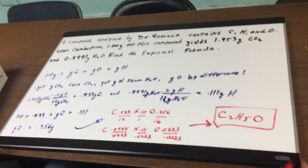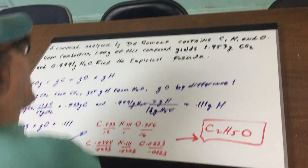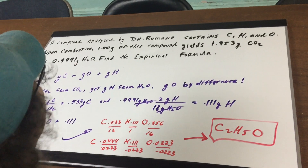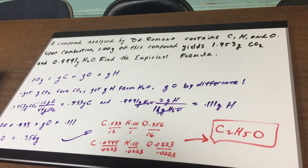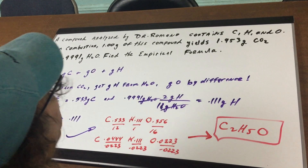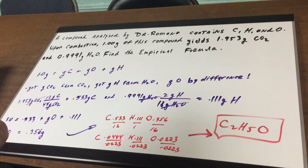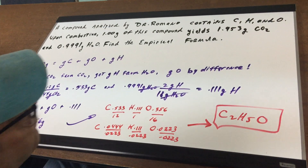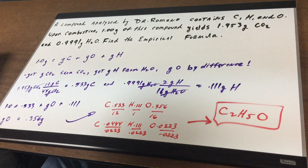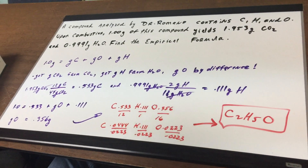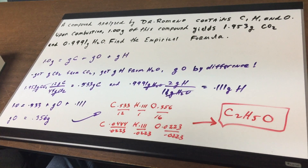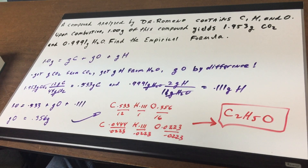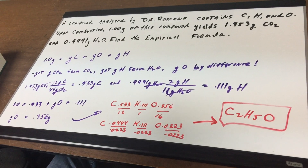It says here that I analyzed a compound containing carbon, hydrogen, and oxygen. When I did this combustion on one gram of the compound, 1.953 grams of CO2 and 0.9991 grams of water were found, and I want to find the empirical formula.